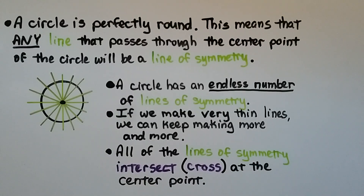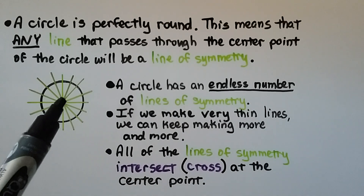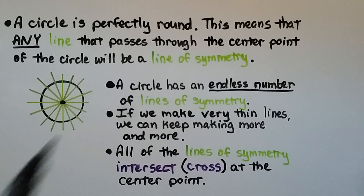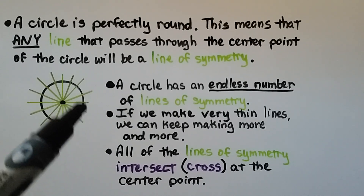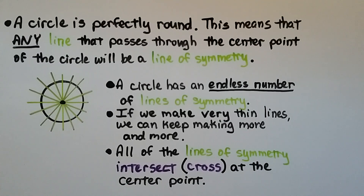A circle is perfectly round, which means any line that passes through the center point of the circle will be a line of symmetry. A circle has an endless number of lines of symmetry. All of these lines of symmetry intersect — meaning they cross — at the center point.